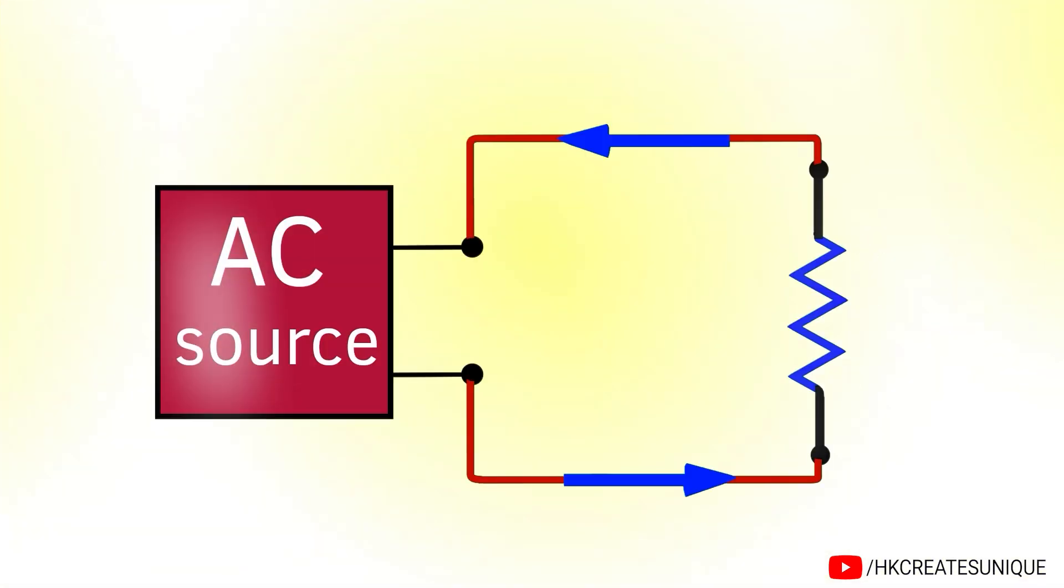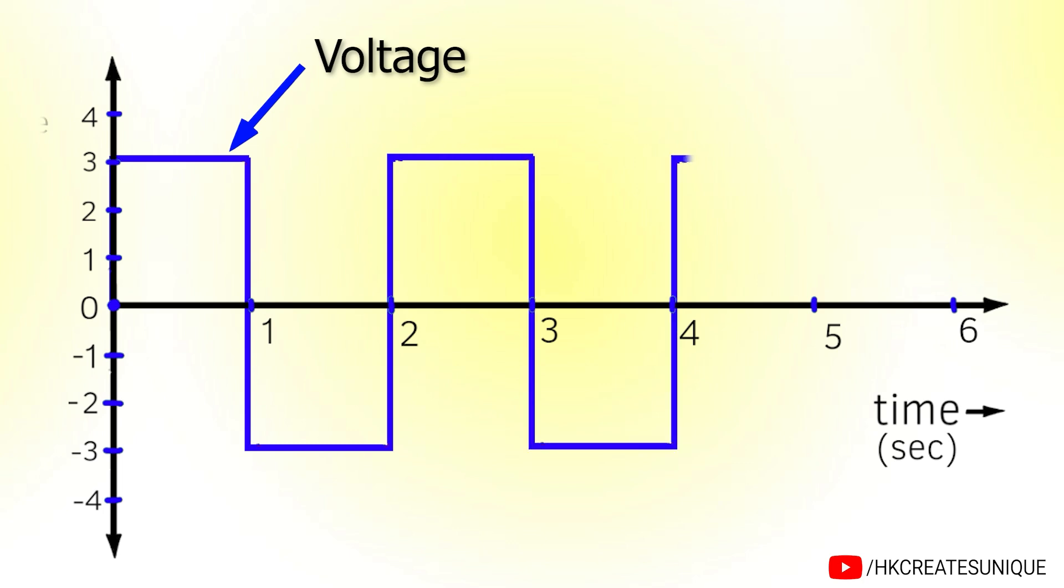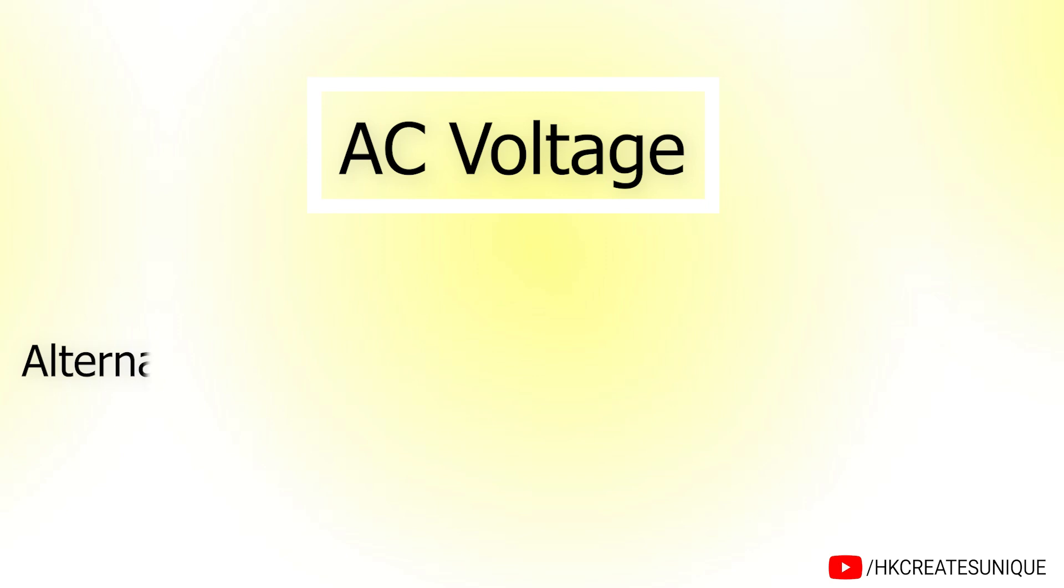To produce alternating current through a load, the voltage provided by the source should also be alternating. So in an AC circuit, if voltage is like this, only then current will flow through the load in an alternating fashion. So the phrase AC voltage means alternating voltage that creates alternating current.